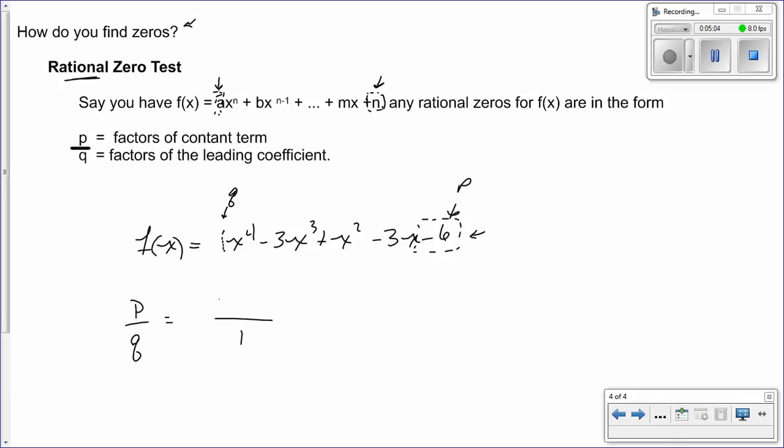And then we're going to take all our factors of negative 6 and put them on the top. So, of course, that's going to be plus or minus 1, plus or minus 2, plus or minus 3, and plus or minus 6 over plus or minus 1. So basically, all of our possible zeros are going to be plus or minus 1, plus or minus 2, plus or minus 3, or plus or minus 6.